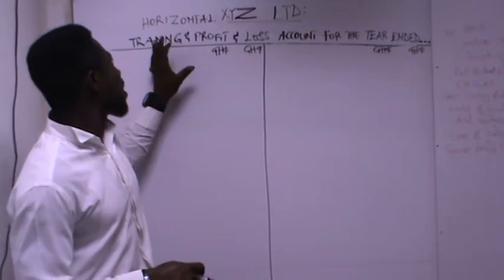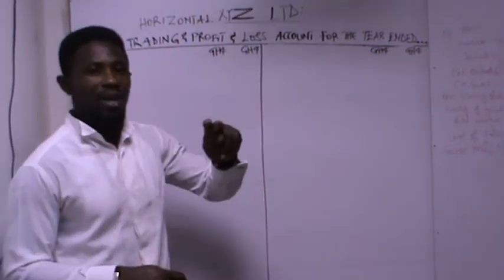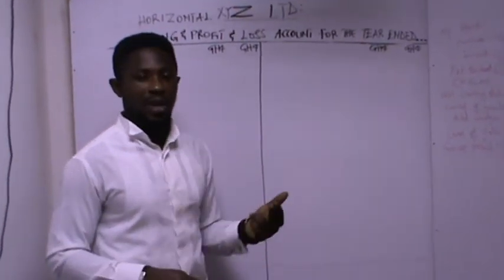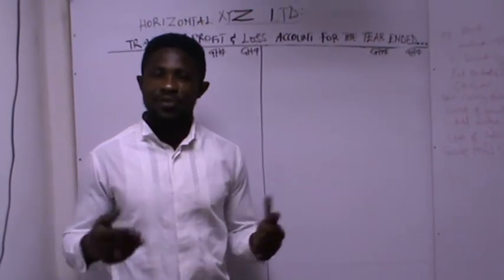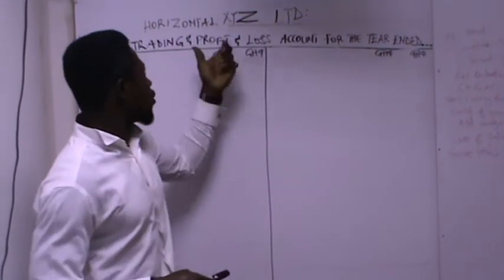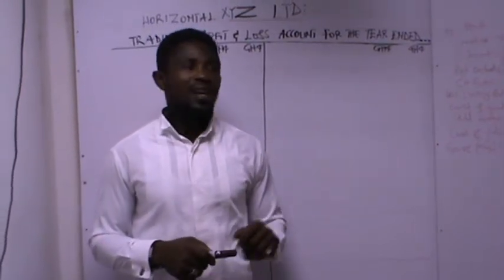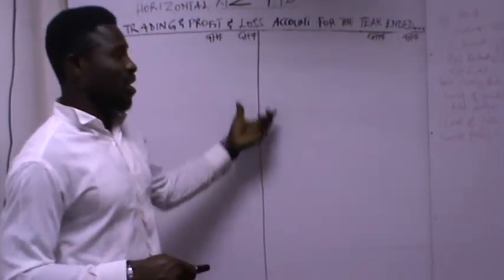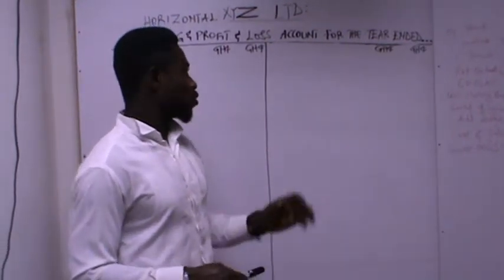Remember, we are preparing the trading and profit and loss account. We have two methods for preparation: we have the horizontal method and the vertical method. But today we are going to consider the horizontal method.